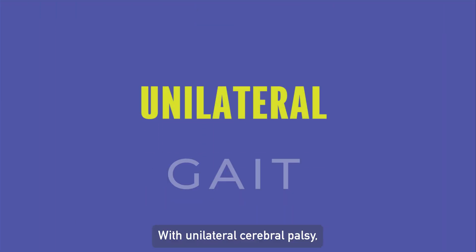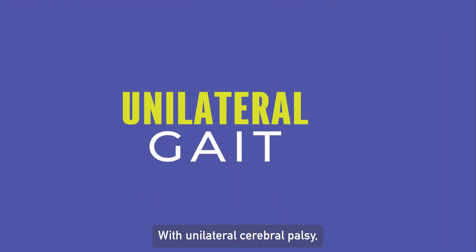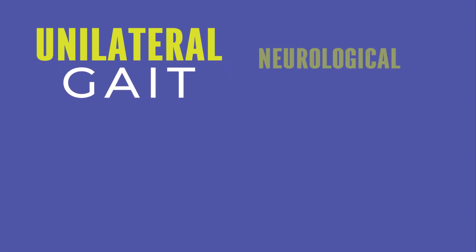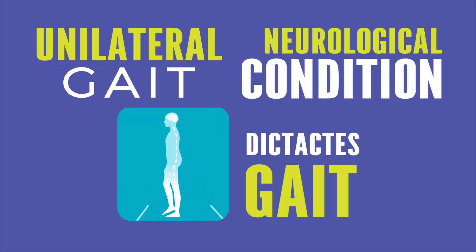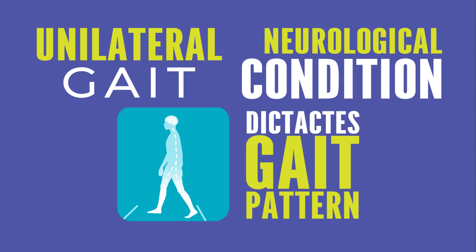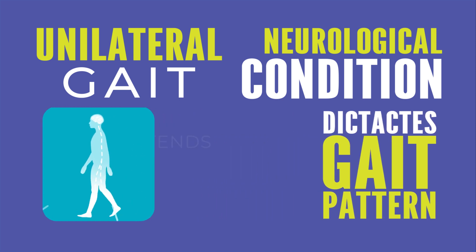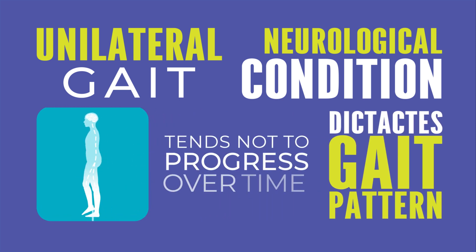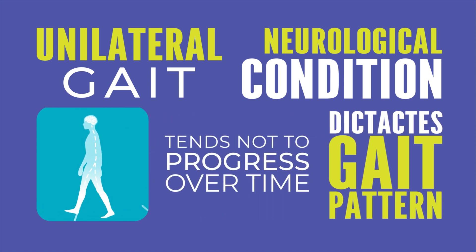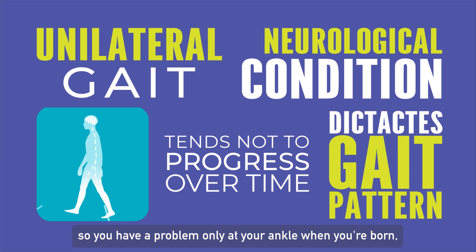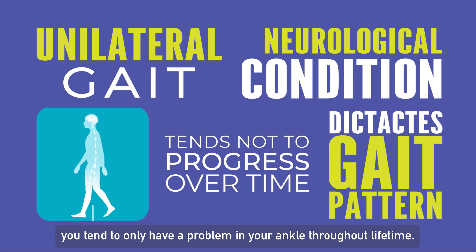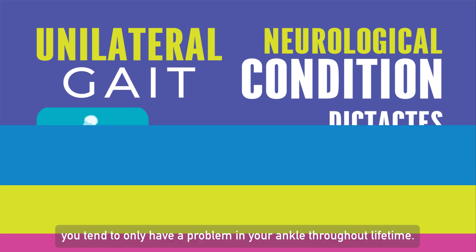With unilateral cerebral palsy, the neurological condition really dictates the gait pattern. It tends not to progress over time — so if you have a problem with only your ankle when you're born, you can tend to have a problem with your ankle throughout your lifetime.